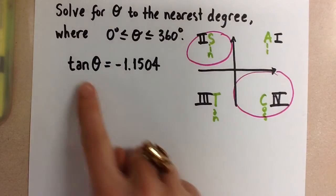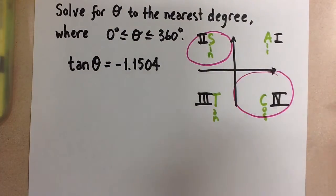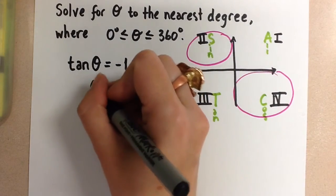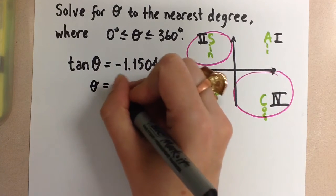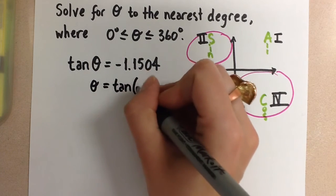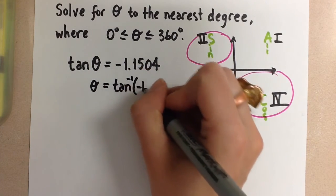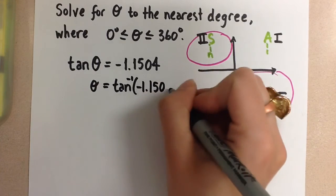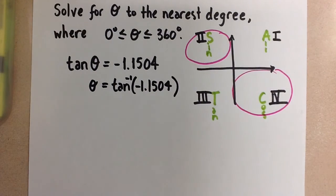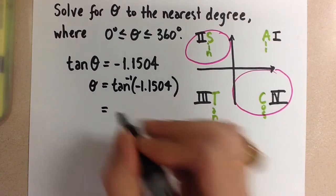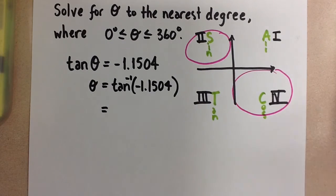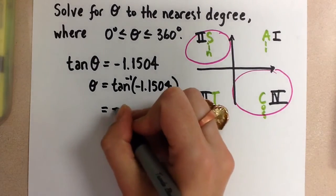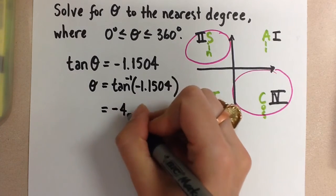So the first thing we want to do is solve for angle theta here using the inverse of tangent. So we do this on our calculator to solve for theta. And when we do that, we're going to get negative 49 degrees.